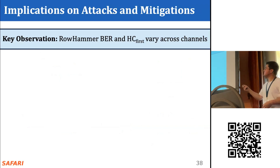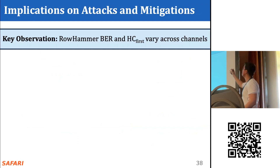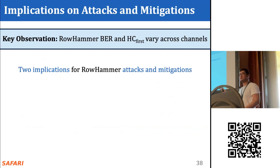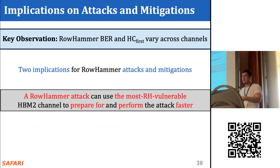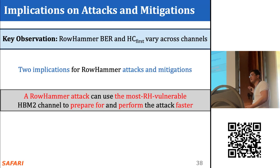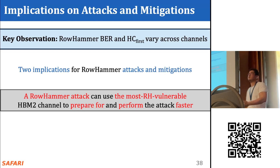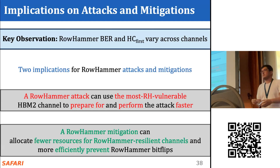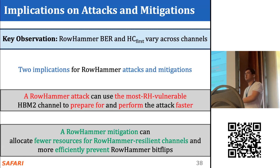We observe that both bit error rate and the activation count for the first bit error change across channels. This has two key implications. First, attackers can leverage this and use the most vulnerable channel to accelerate the preparation and attack phases, potentially taking over systems more quickly. Second, mitigations can allocate fewer resources to protect RowHammer-resilient channels and more resources to protect vulnerable channels, allowing for more efficient mitigation mechanisms.